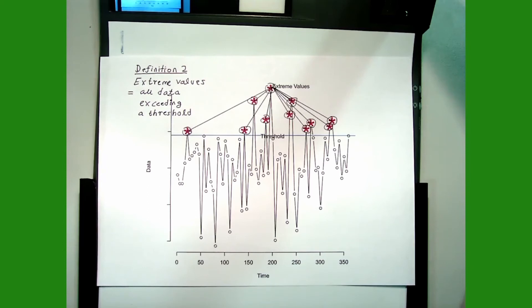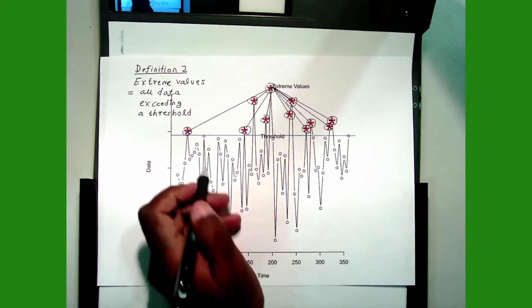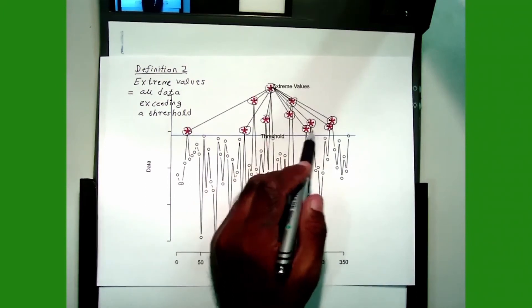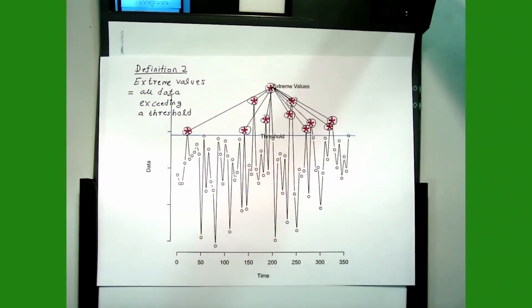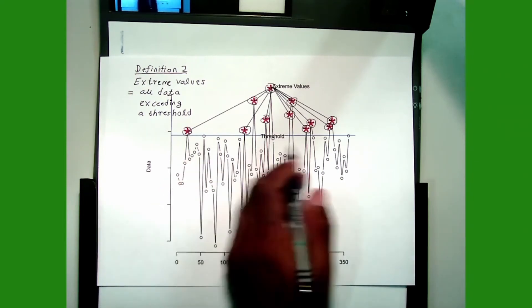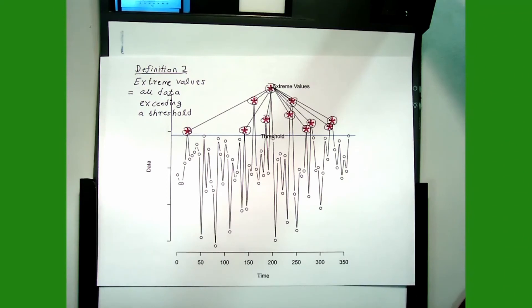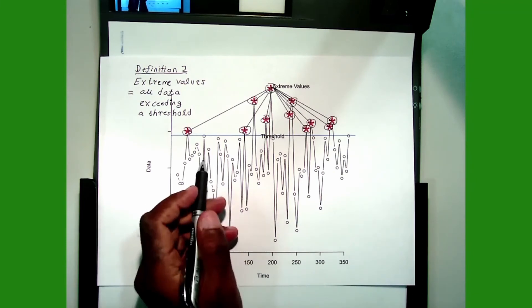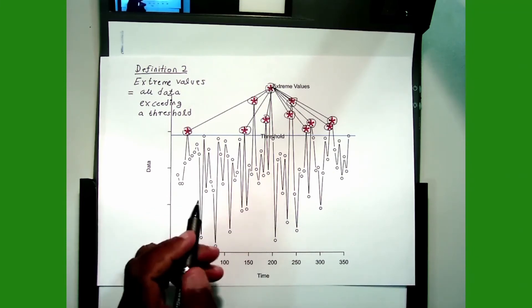So in this picture there are 1, 2, 3, 4, 5, 6, 7, 8, 9, 10, 11 — there are 11 extreme values, because there are 11 data points which go above the threshold.